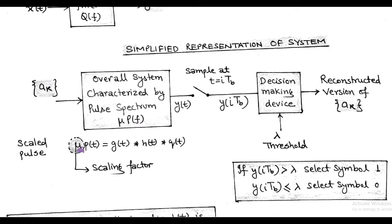In the time domain, it is represented by μ·p(t), that is called the scaled pulse, where μ is the scaling factor. So μ·p(t) = g(t) * h(t) * q(t), i.e. the convolution of the transmit filter, channel, and receive filter responses.